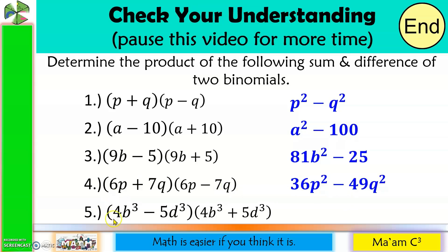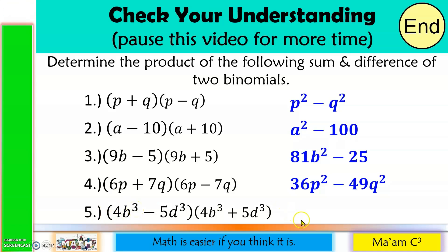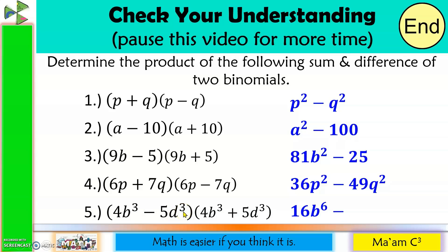Number 5: the square of 4 is 16; B cubed squared is B to the 6th, so we have 16B to the 6th. Minus: 5 squared is 25; D cubed squared is D to the 6th, so we have 25D to the 6th.